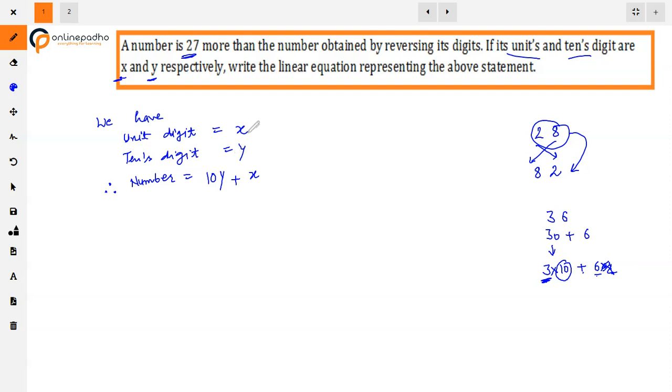The number will be tens digit y and unit digit x, so this is the number. This will be multiplied by the place value. So we have to do this in standard form.